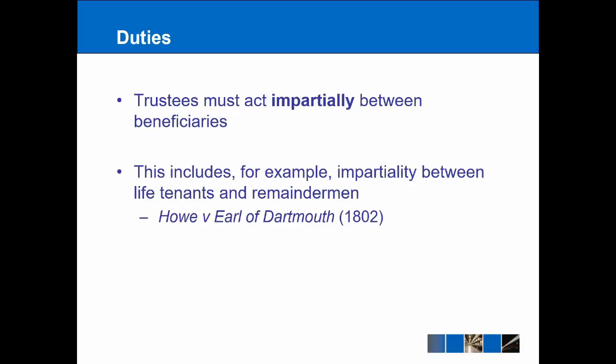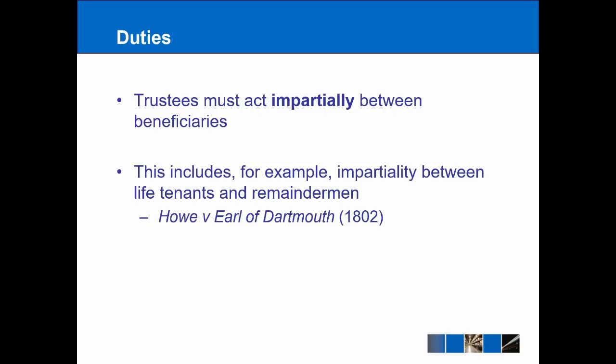Secondly, trustees have to act impartially between the different beneficiaries. There might be different relationships — maybe a 60/40 relationship — but they should act appropriately. This often comes up in property cases, particularly with life tenants and remainder men. A life tenant can use a property for their lifetime and the remainder man gets it after. The trustee has to balance whether to sell the property and how to divide proceeds between the two.